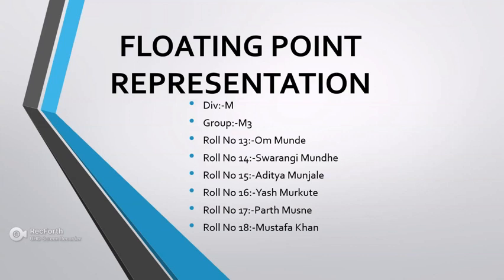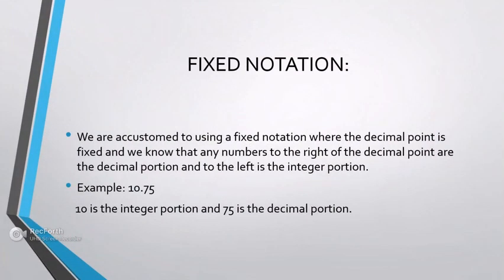The description of binary numbers in the exponential form is called floating point representation. Before getting into it, let's first discuss fixed notation. We are accustomed to using fixed notation where the decimal point is fixed, and we know that any numbers to the right of the decimal point are called the decimal portion of the number, and numbers to the left are called the integer portion.